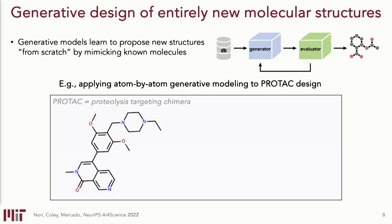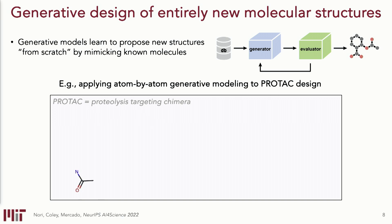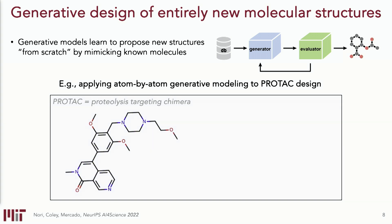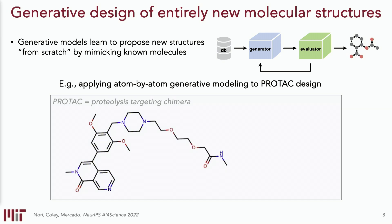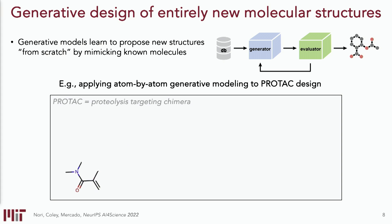We've worked on a number of different models and methods for molecular design. This animation shows one designed to propose new molecules to serve as PROTACs — proteolysis targeting chimeras — a relatively new modality designed to bring two proteins together, tag one for degradation, and use the body's natural degradation machinery to decrease the abundance of a protein we'd like to inhibit. This PROTAC molecule is being generated atom by atom, because we're treating the molecule as a graph. The result is a molecule predicted to have some efficacy as a PROTAC.